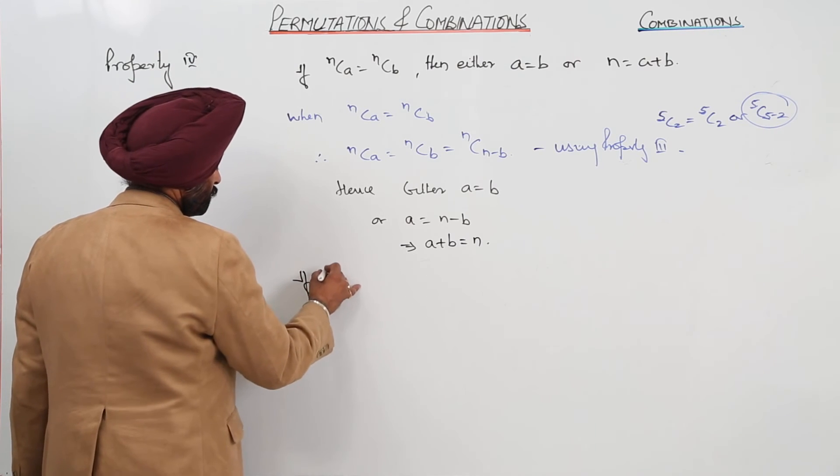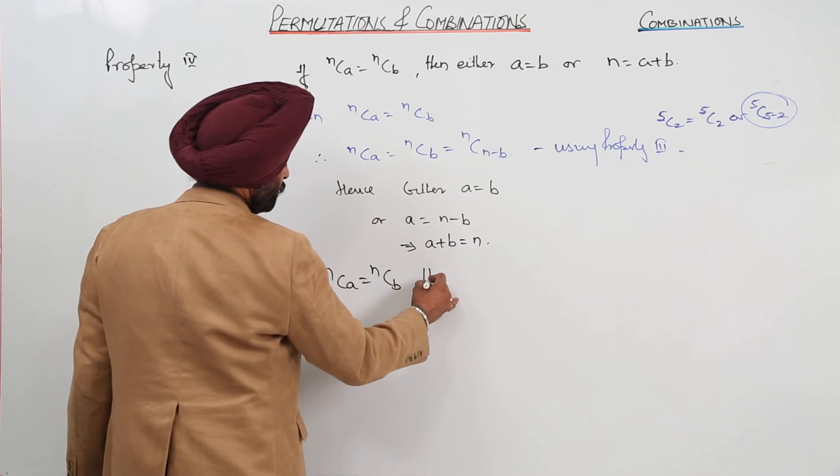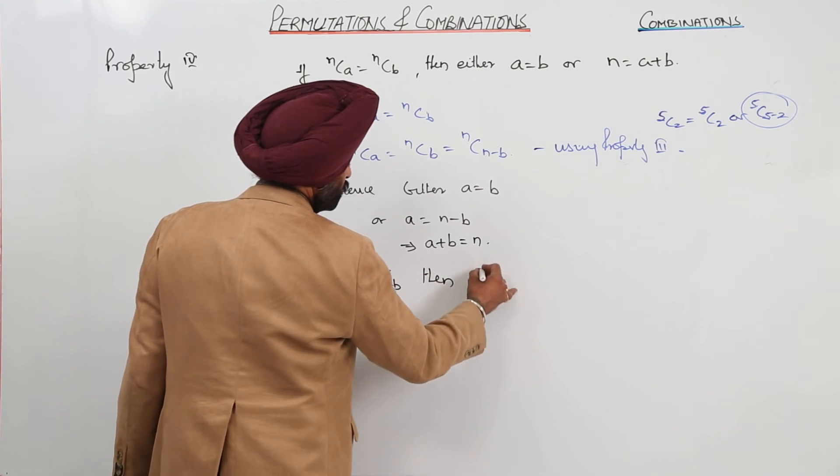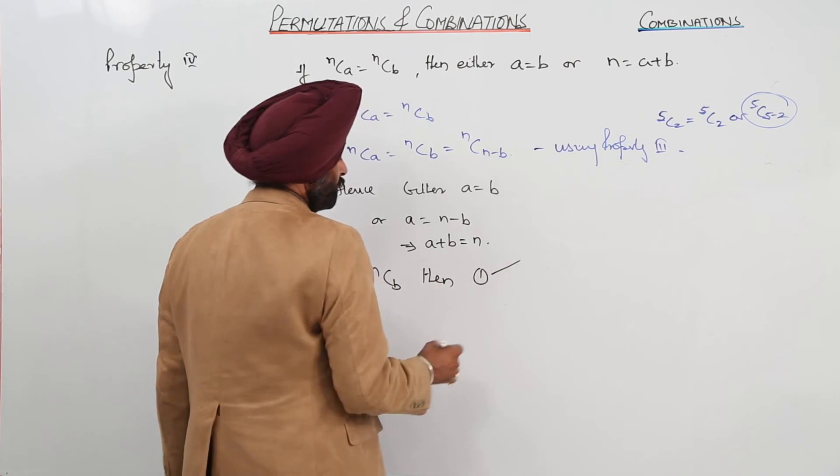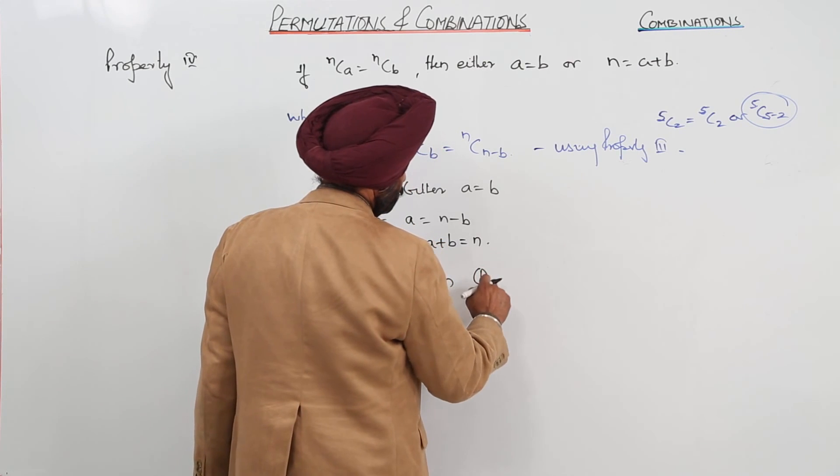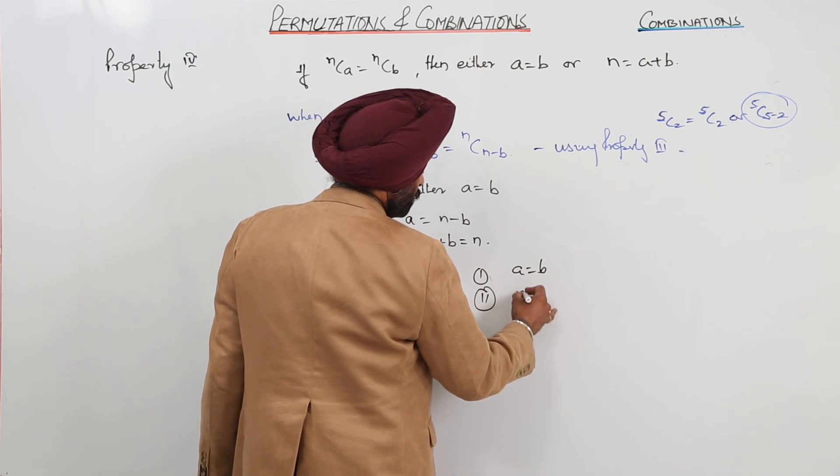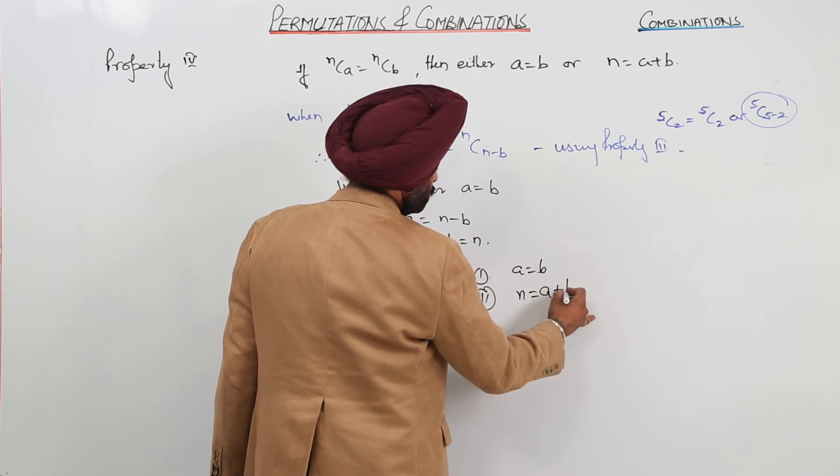If nCa is equal to nCb, then we are having two conditions. Number one: a is equal to b. Or number two: n is equal to a plus b.